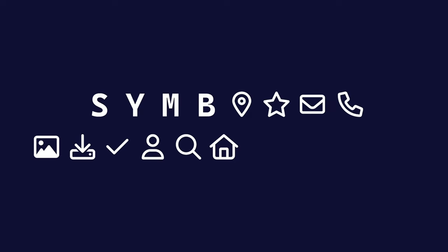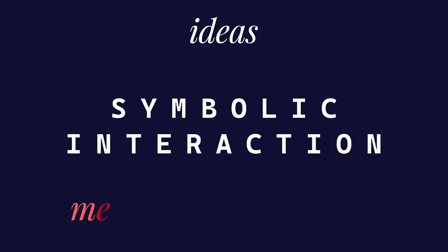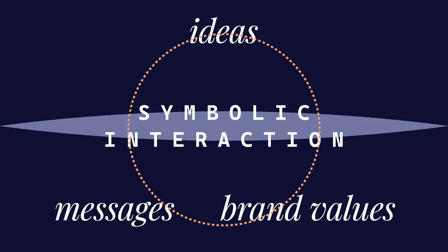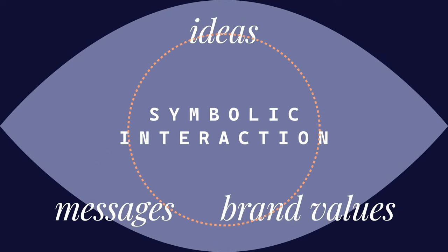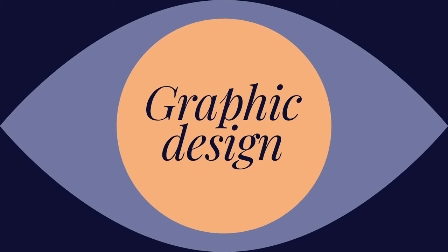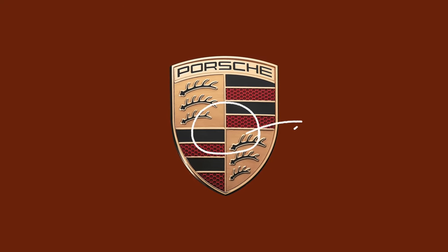Symbolic interaction refers to a quick and efficient communication of ideas, messages, or brand values without the need for lengthy explanations — everything is just communicated visually and quickly. It takes what graphic design is at its core and doubles down on that notion. Let me show you some real life examples of this in action, and then at the end of today's video we're going to test your knowledge on the content you've just seen.